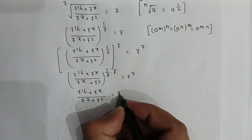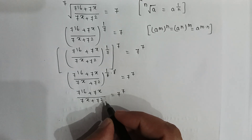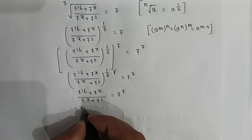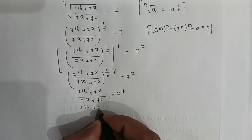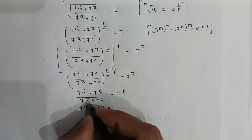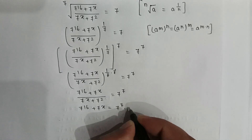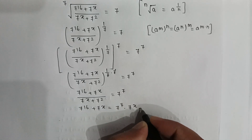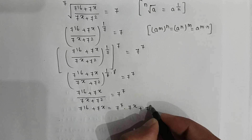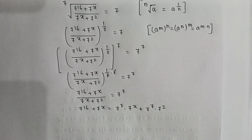Cross multiplying gives: 7 to the power 16 plus 7 to the power x is equal to 7 to the power 7 times 7 to the power x, plus 7 to the power 7 times 7 to the power 2.